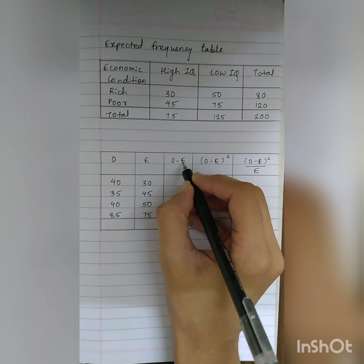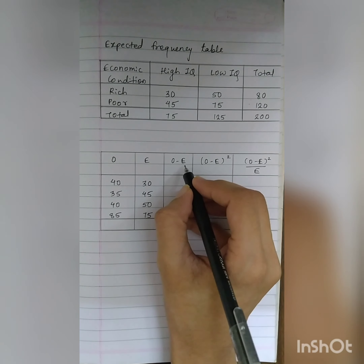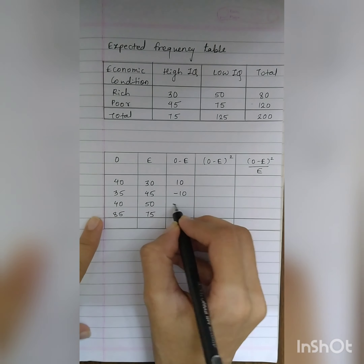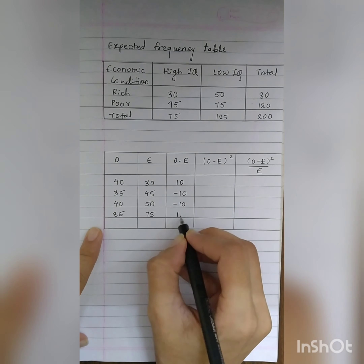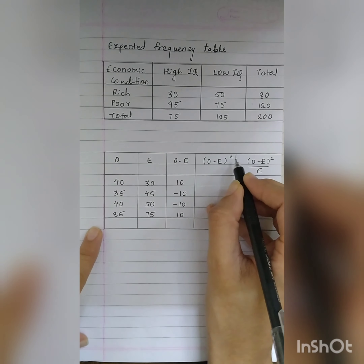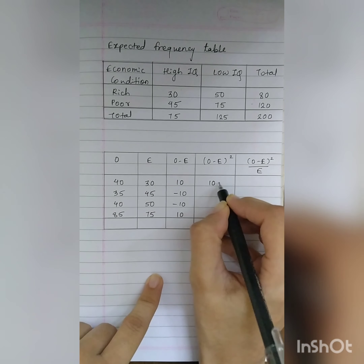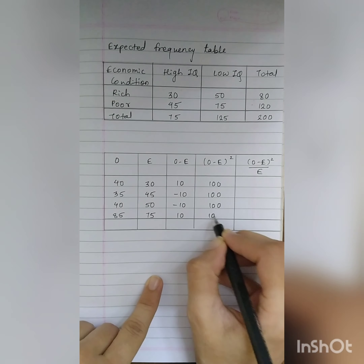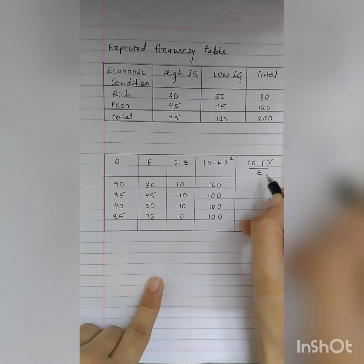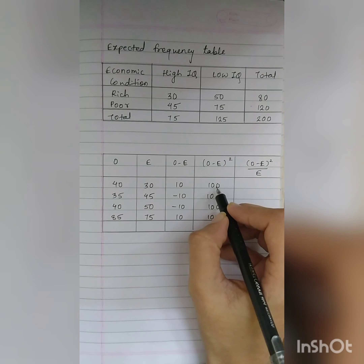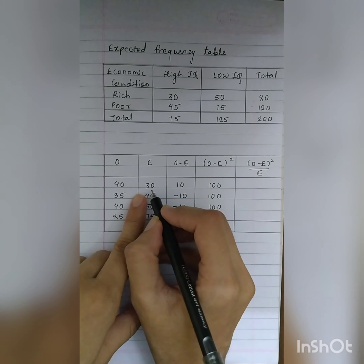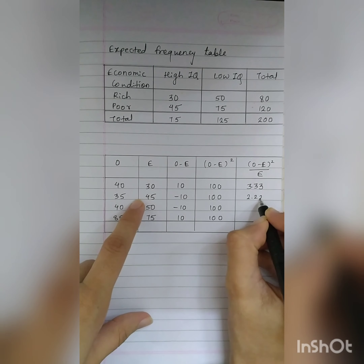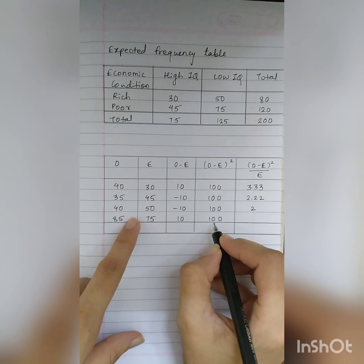The (O minus E) squared values are: 10 squared equals 100; minus 10 squared equals 100; minus 10 squared equals 100; 10 squared equals 100. The last column, (O minus E) squared divided by E, gives: 100 divided by 30 equals 3.33; 100 divided by 45 equals 2.22; 100 divided by 50 equals 2; and 100 divided by 75 equals 1.33.